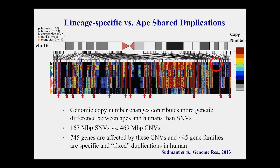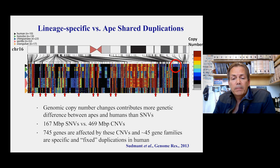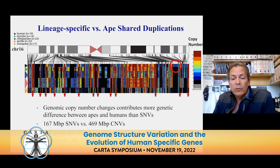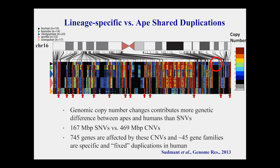There is a lot of variability, and some regions have extremely high copy number, highlighted by the red arrows. In terms of genetic change between humans and non-human apes, counting megabases affected by single nucleotide variants versus copy number variation from duplicated sequences gives 167 versus 469 megabases — four times more bases are affected by segmental duplication copy number variation than by SNPs. In terms of genes, 745 genes are affected, and at least 45 gene families appear to be specific and fixed in the human lineage.